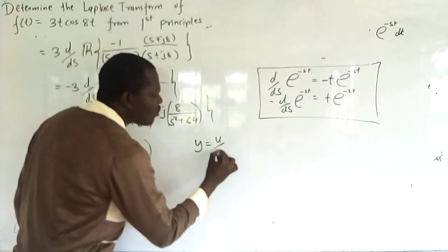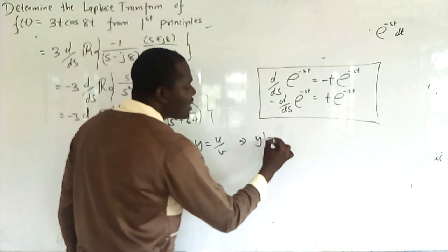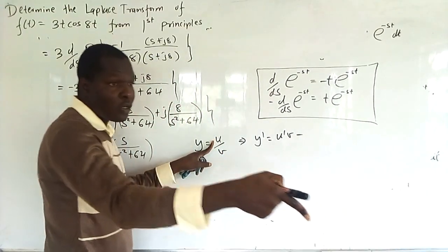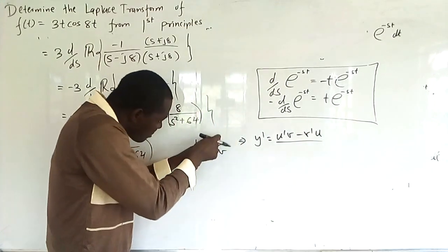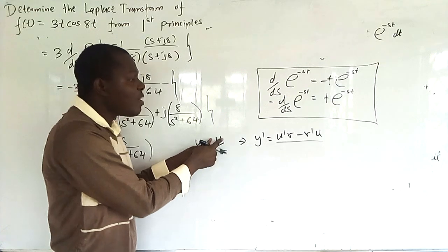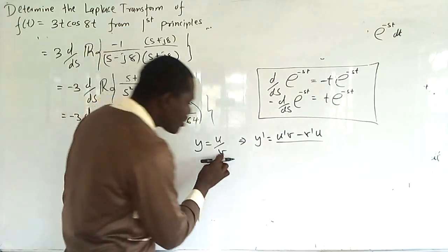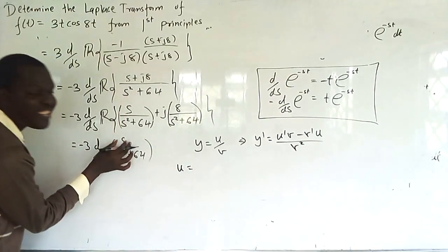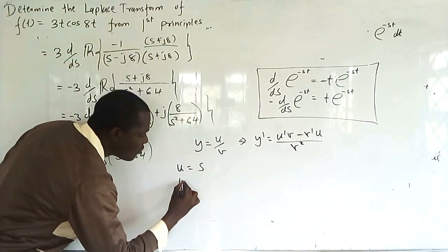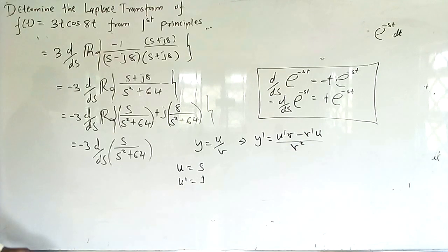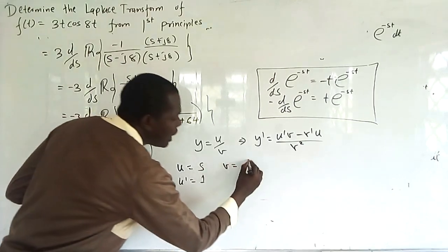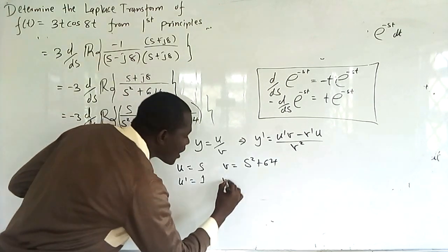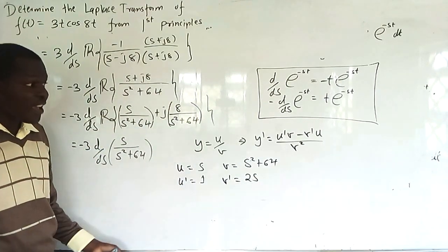In the quotient rule, when Y = U/V, the derivative is (U'·V - V'·U) / V². Here U = s so U' = 1, and V = s² + 64 so V' = 2s.